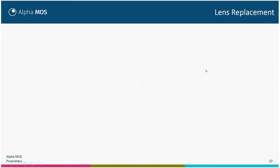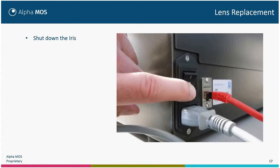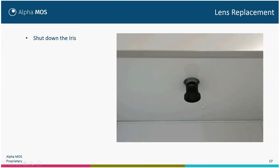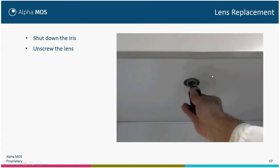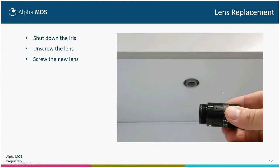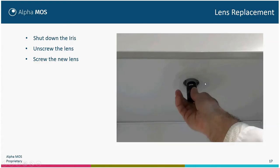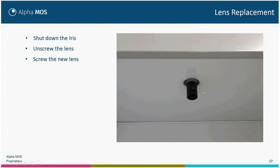Lens replacement is very easy. First, shut down the iris by clicking on zero. Then open the cabin and you will see the lens. Unscrew it delicately — be careful not to let it fall. Remove it delicately and put it in its protective box. Take the new lens. Never touch the glass optics with your bare hands — only touch the plastic parts. Screw the new lens in place with about five to ten turns. When finished, you will feel it seat properly — it takes only a few seconds.